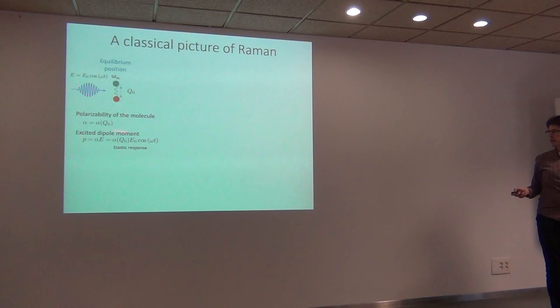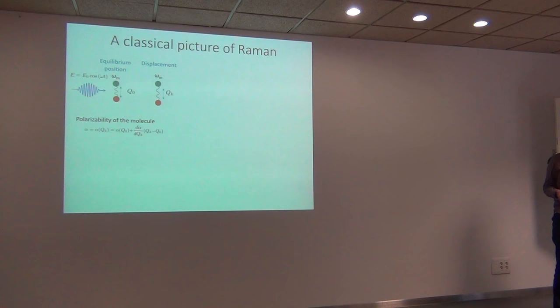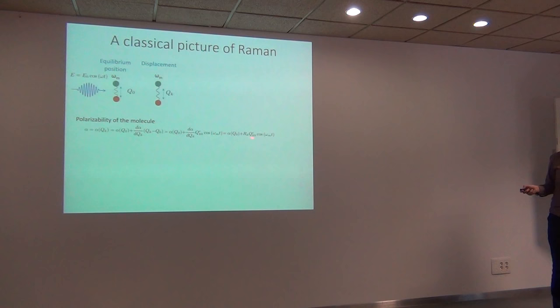In Raman, the key is that the position of the atoms can move. As the atoms move along the generalized coordinate, the polarizability of the molecule changes. For small movements we can expand to first order. When we consider that the displacement is a vibration — just an oscillation — it has an oscillatory form, and this derivative is usually what is called the Raman tensor in a simplified picture.